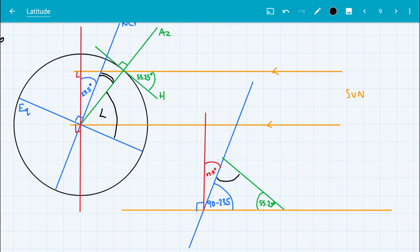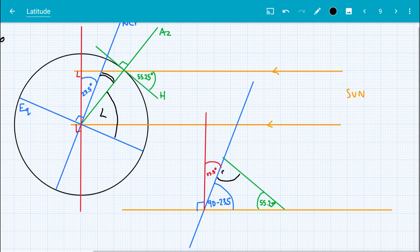And so using those, we can calculate this angle here. So I'm just going to take my calculator out. Type in 180 degrees, subtract 55.25. We're also going to subtract 90 minus 23.5. So be careful with that. Gives you 58.25. So that's that angle there.